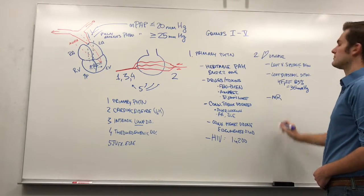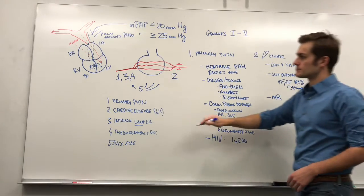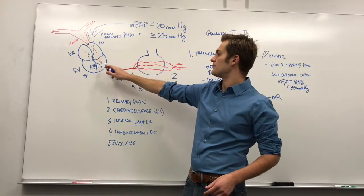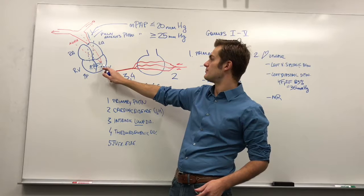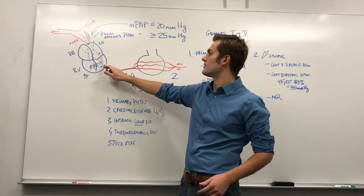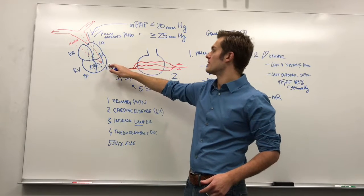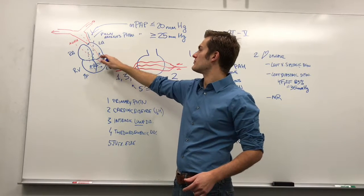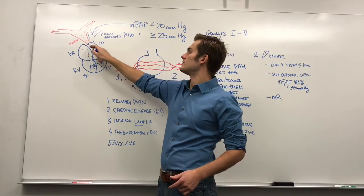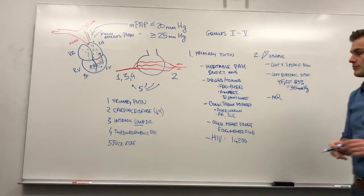And mitral regurgitation is the third one, because there's blood that gets backed up through the mitral valve since it's insufficient and can't prevent backflow. Then this backflow causes left atrial dilation, and this dilation propagates all the way up into the pulmonary veins.